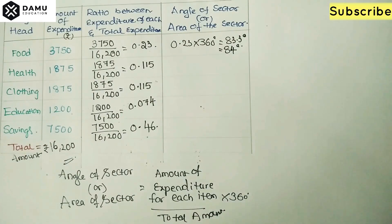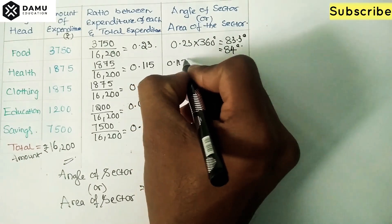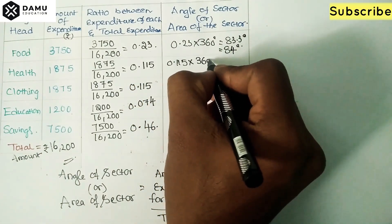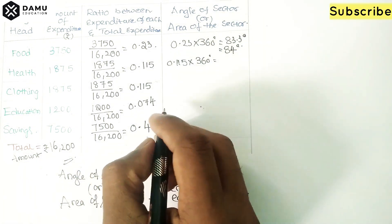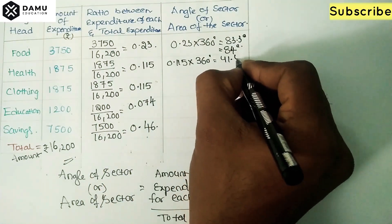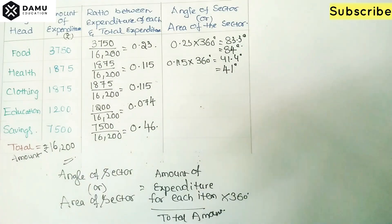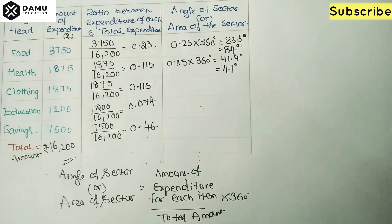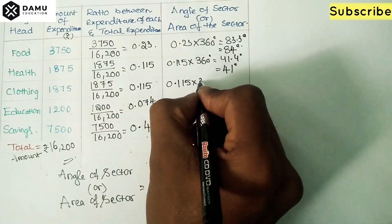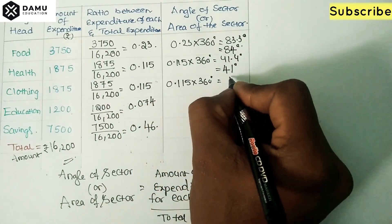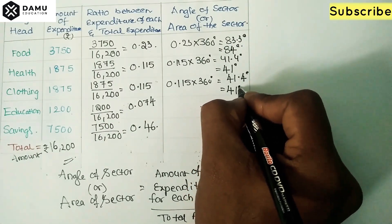For health: 0.115 × 360 = approximately 41.4 degrees, which we take as 41 degrees. For clothing: 0.115 × 360 = also 41.4 degrees, taken as 41 degrees.